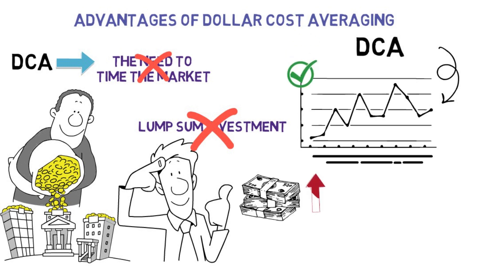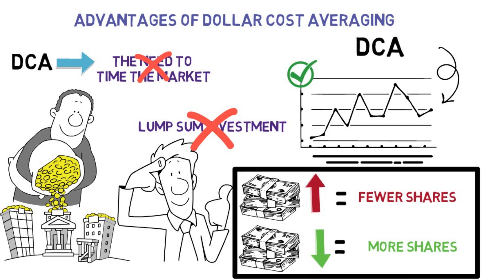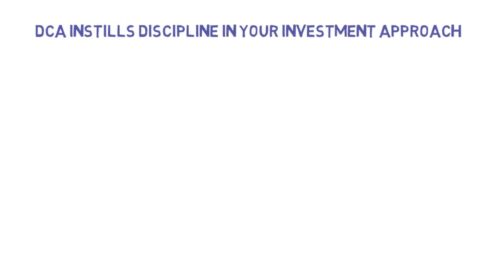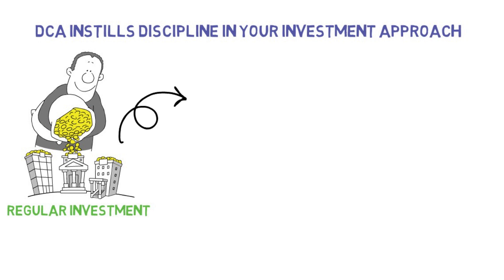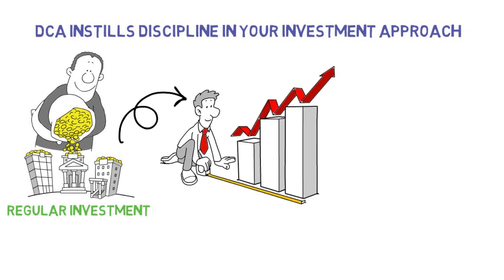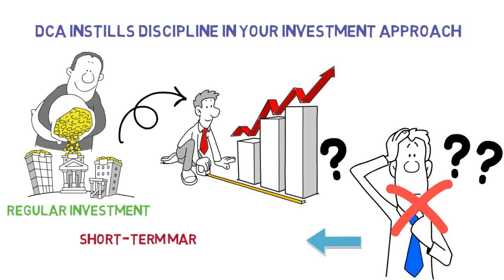When prices are high, your fixed investment amount buys fewer shares. And when prices are low, your fixed investment amount buys more shares. This allows you to take advantage of market volatility. Additionally, it produces discipline in your investment approach. By automating regular investments, you're more likely to stay invested for the long term and avoid emotional decision-making based on short-term market movements.